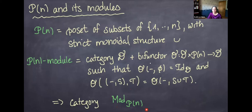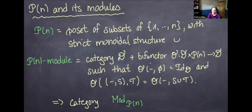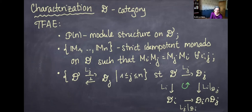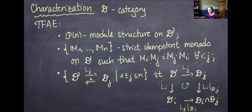What is a Pn module? It's a category D equipped with an action of Pn — a bifunctor from D × Pn to D that is an action in the sense that applying the unit acts as identity and satisfies the usual associativity condition. Having a Pn module structure on D is equivalent to having a family of n strictly idempotent monads on D that commute, or equivalently, n different commuting localizations of D. This is where one might want to work with infinity categories to avoid strict on-the-nose conditions.